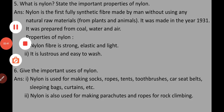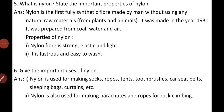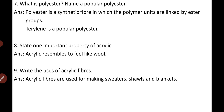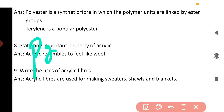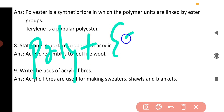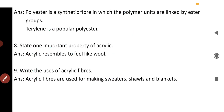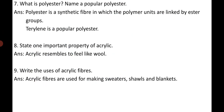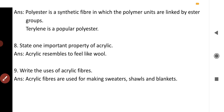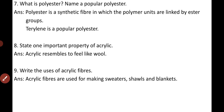Question five: What is polyester? Name a popular polyester. Polyester is a synthetic fiber in which the polymer units are linked by an ester group — many units of ester joined together form polyester. A very popular polyester is terylene.